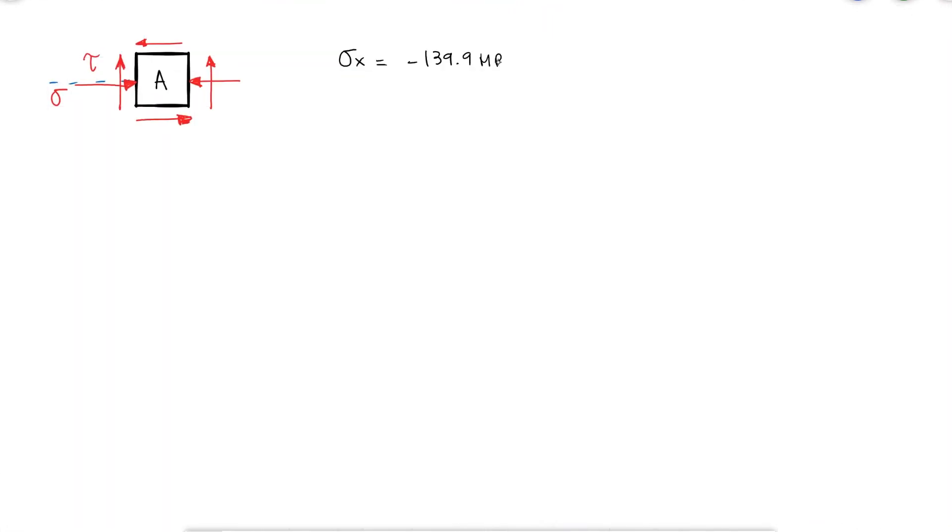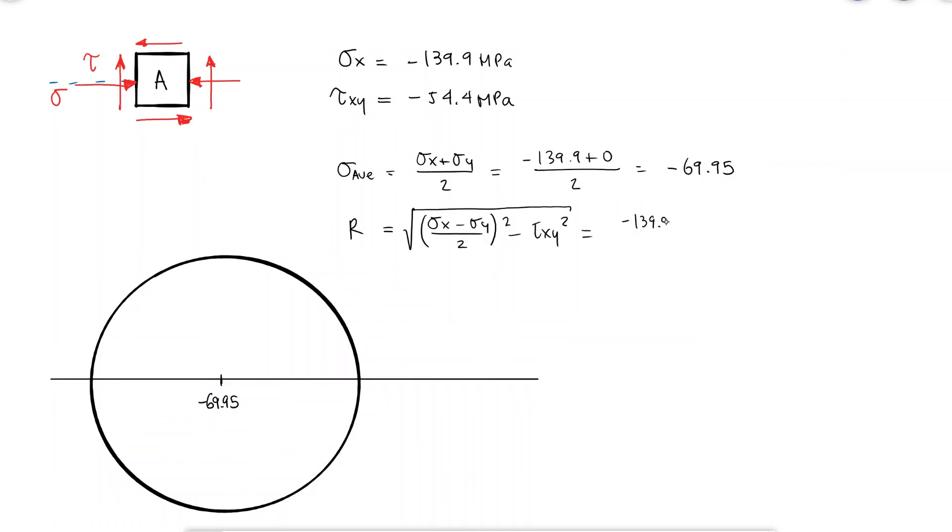Having the stress element and the stress values, we can find the center of the Mohr circle and the radius of the circle. The principal stress on the right would be the center plus the radius, and the principal stress on the left would be the center minus the radius. We'll call these principal stresses sigma A and sigma B.